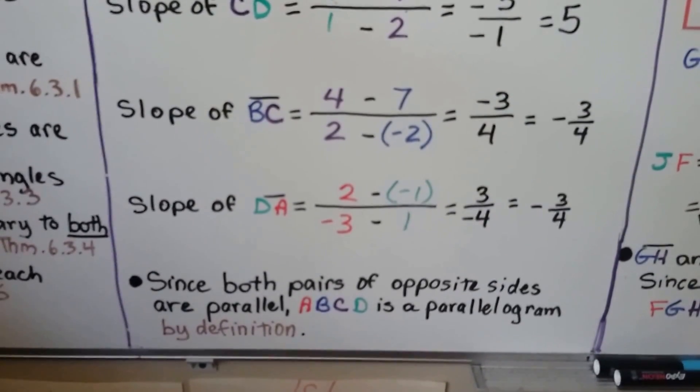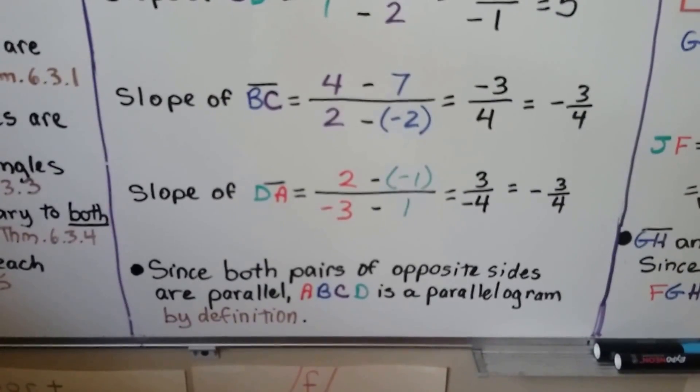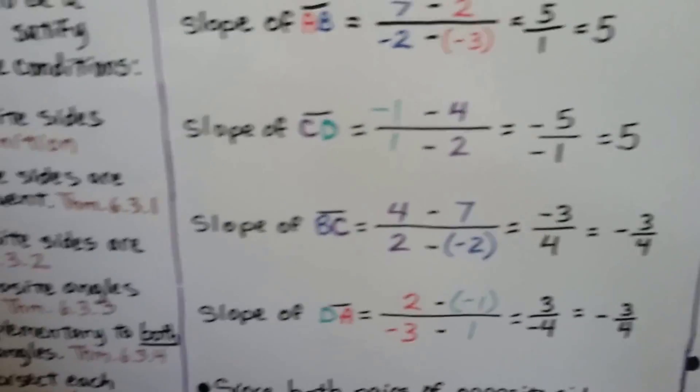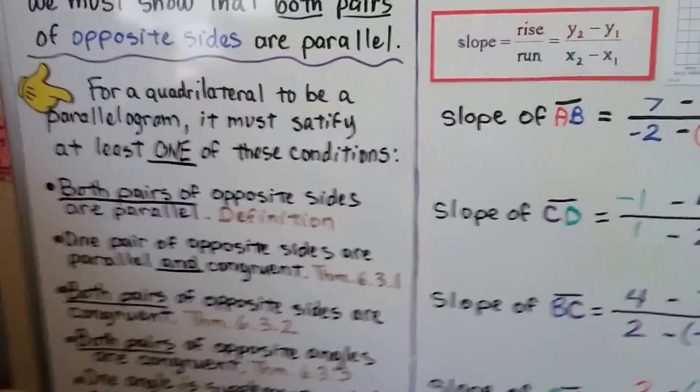And since both pairs of opposite sides are parallel, ABCD is a parallelogram by definition. The definition says both pairs of opposite sides are parallel.